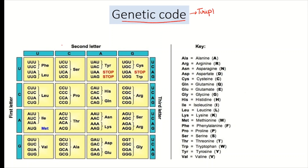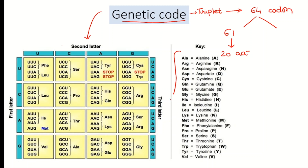Three different nitrogen bases make one codon, giving us a total of 64 different types of codons, and all these combinations are shown in the image here. Among these 64 codons, 61 codons code for 20 different kinds of amino acids — the names of these 20 amino acids are shown in the table. Three codons do not code for any amino acid; these are called stop codons. The stop codons are UAA, UAG, and UGA. These three stop codons do not code for any amino acid, so we also call them nonsense codons or terminating codons.